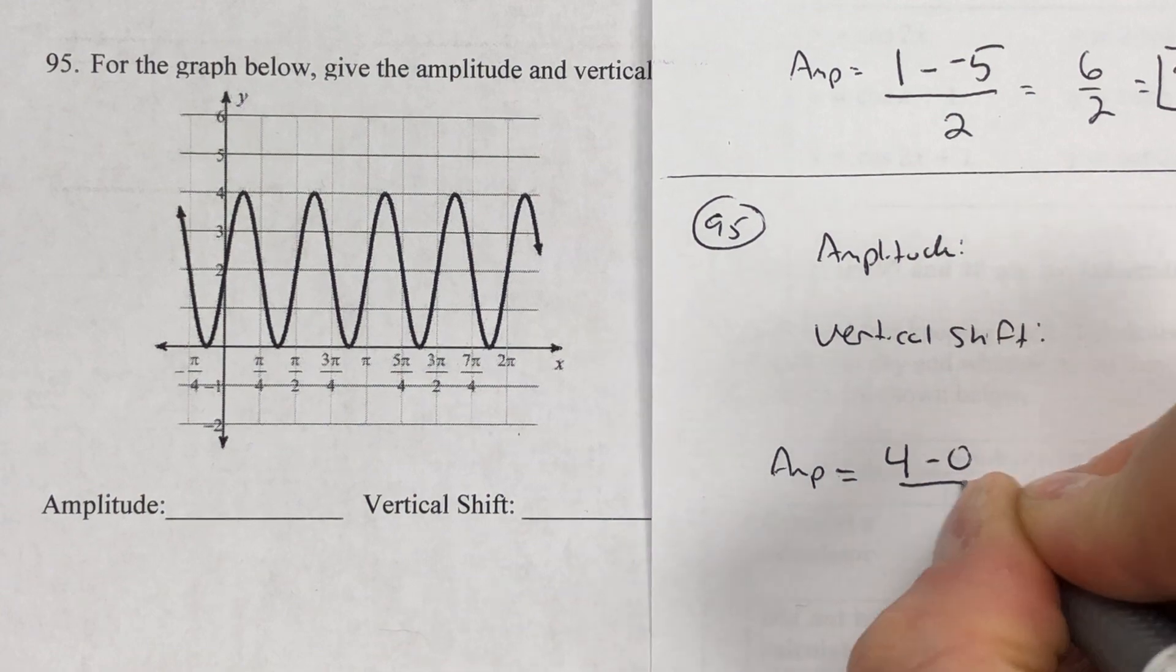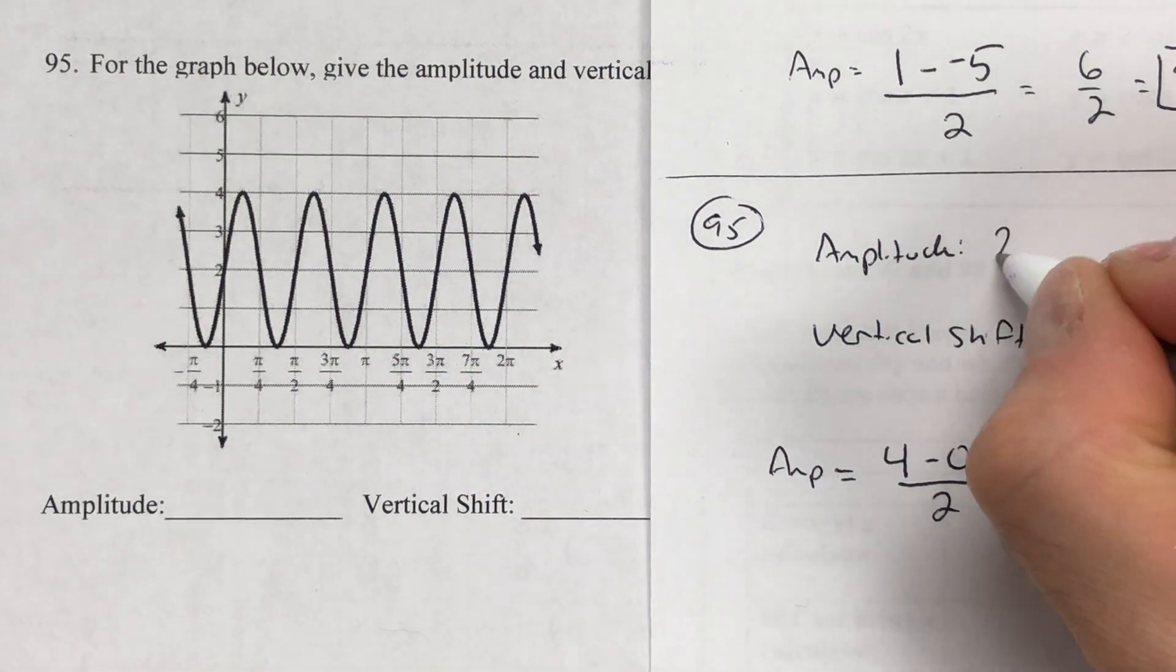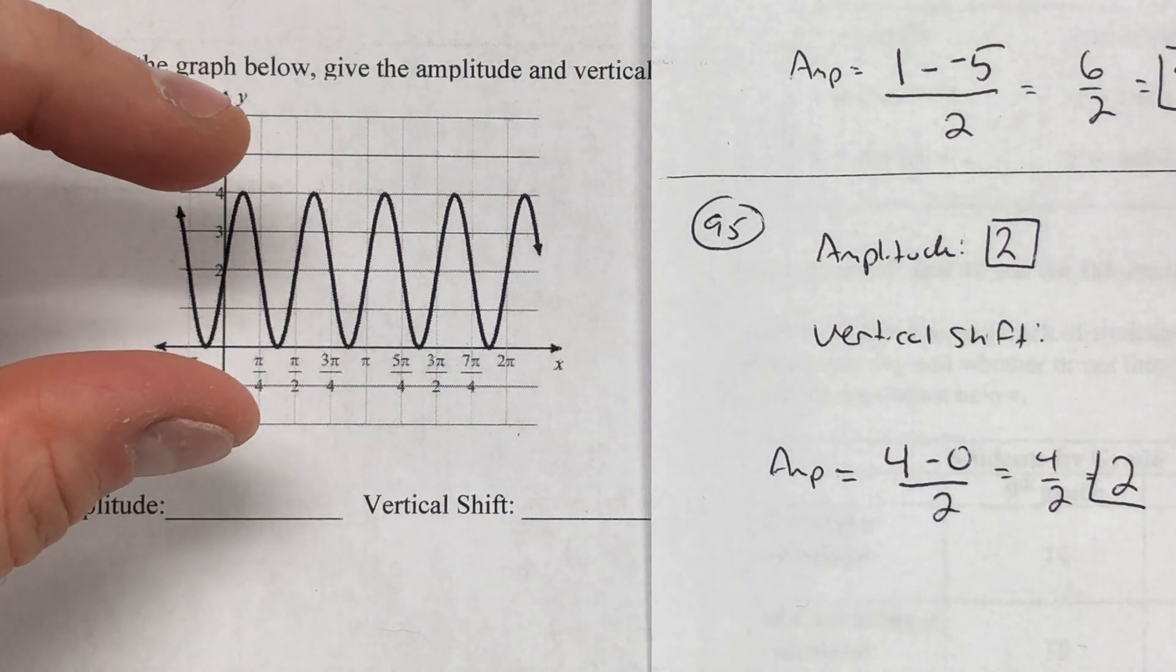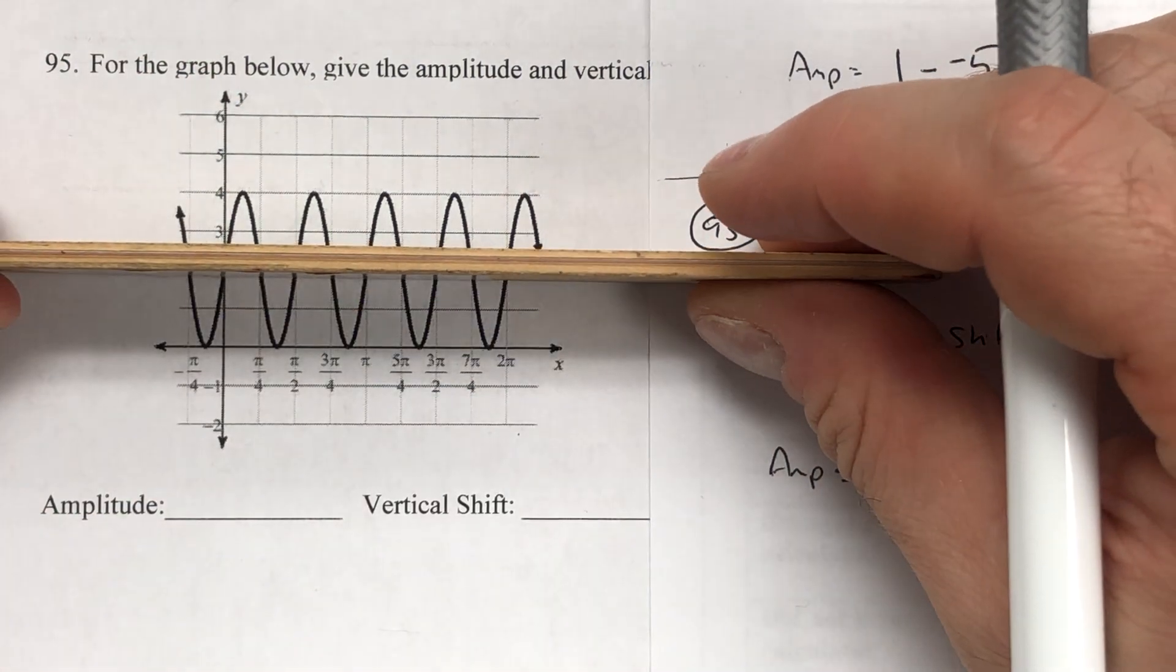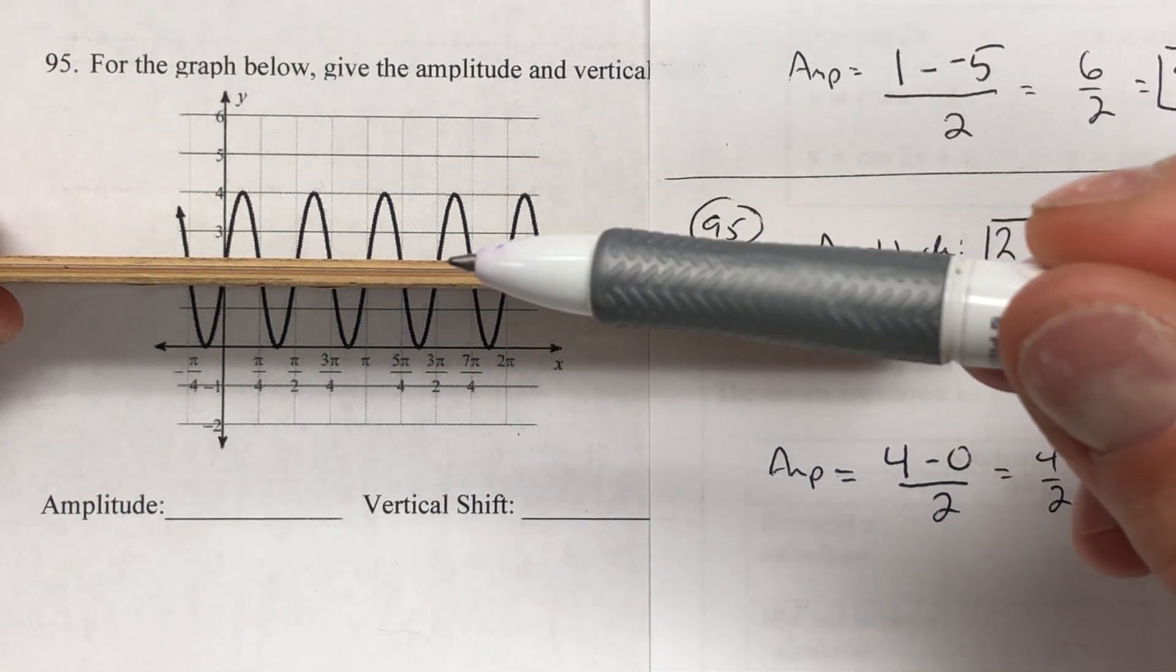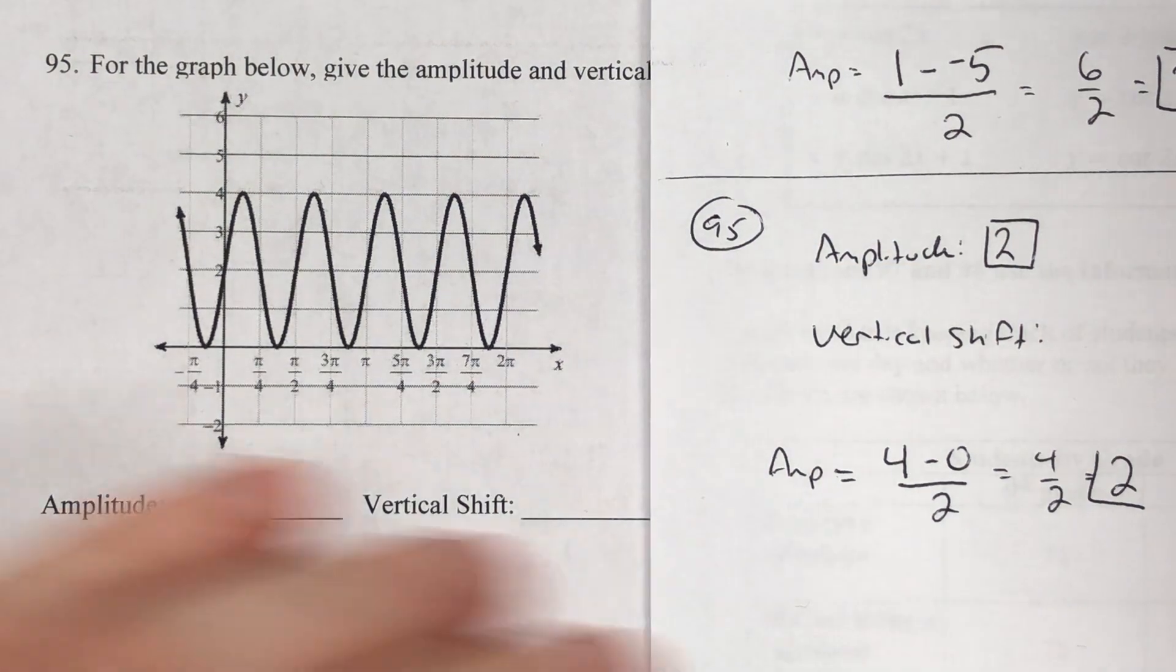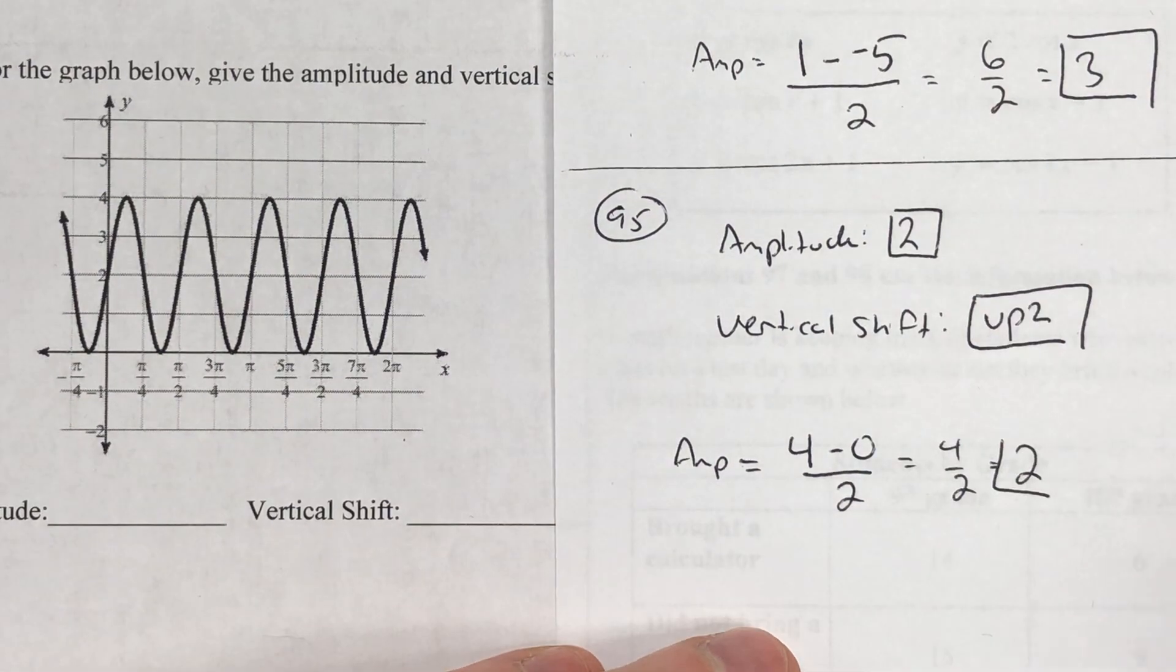So if I have an amplitude of 2, that means the middle of my graph is at 2. And this is a little more intuitive because halfway up to 4 is 2. And we can figure out that if I draw my line right here, I see the fact that I'm going 2 up and 2 down. Now the vertical shift means where is this line in relation to the x-axis. We moved it up 2 units in this case. So the vertical shift is up 2. There we go.